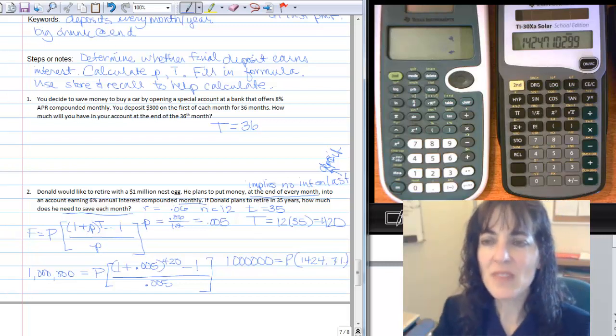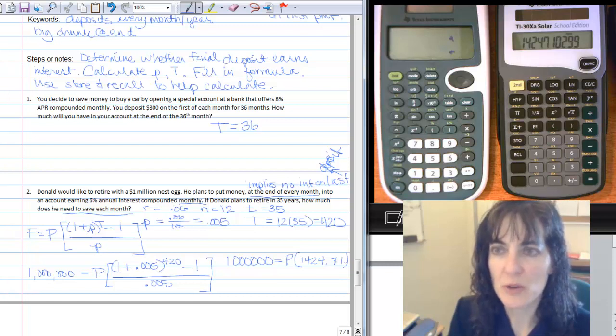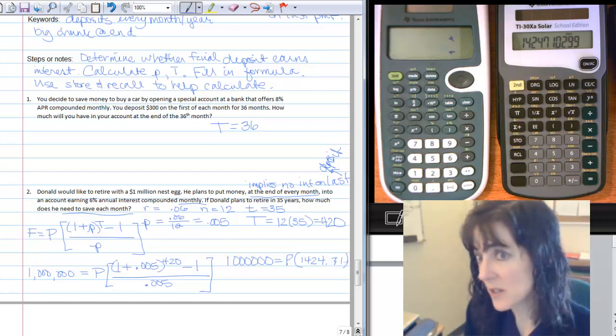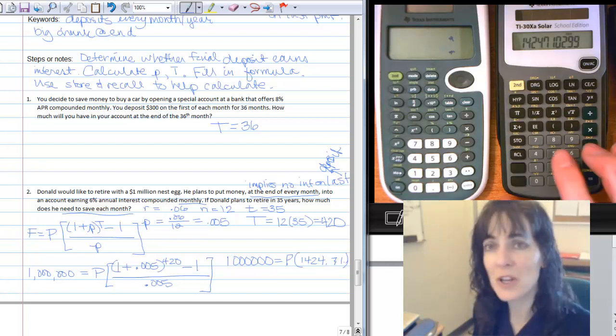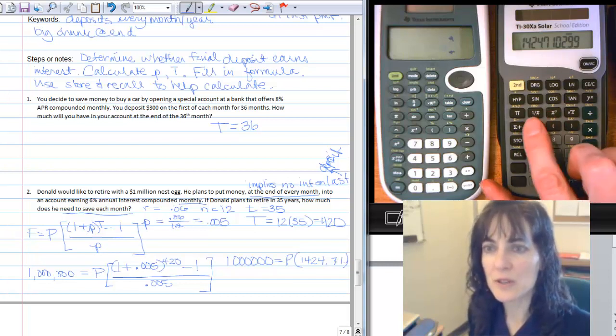And now I can either store this number and then do the division, or I can do the 1 over x. Maybe I'll show you this one using the 1 over x, and I'll show another one using the store.